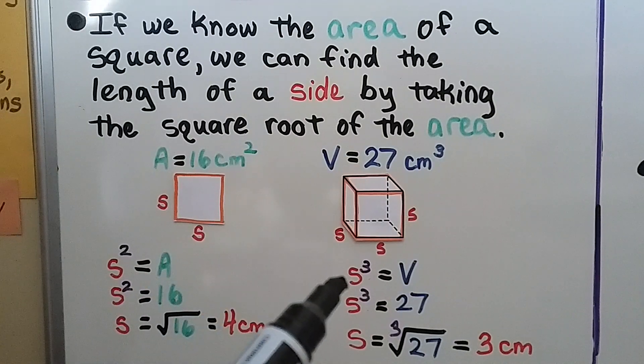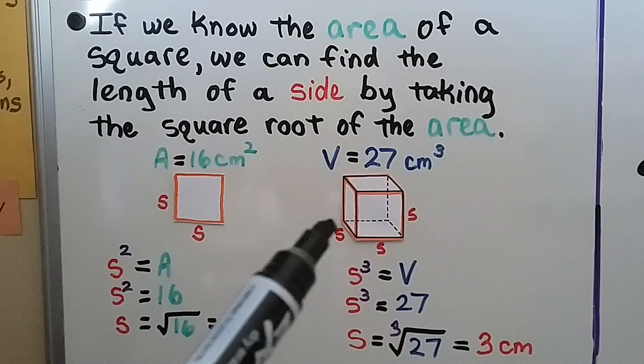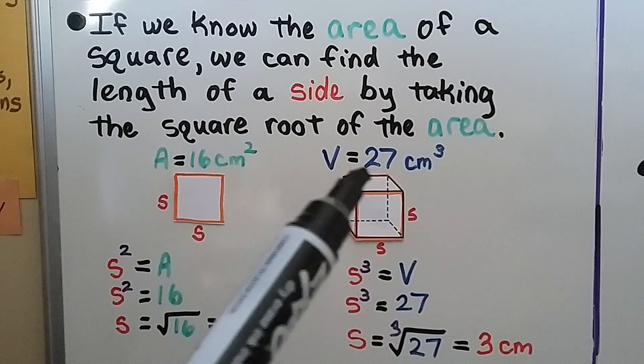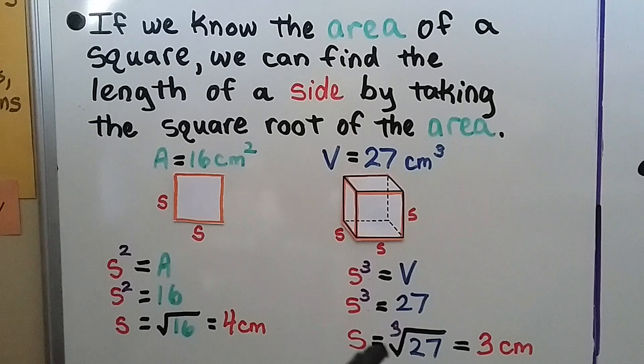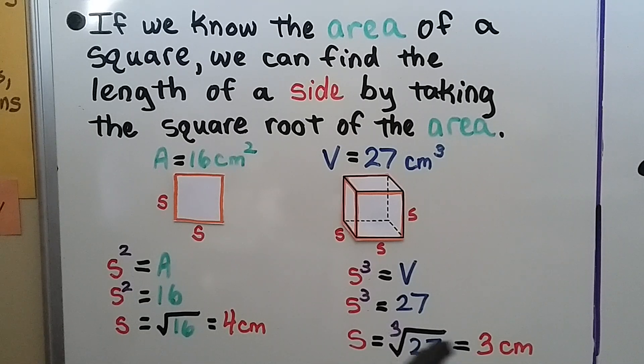For the volume, we would have s cubed, s times s times s. If we're given that it's 27 centimeters cubed, we could take the cube root of 27. That would be 3 centimeters, 3 times 3 times 3. So we know our side length would be 3 centimeters.